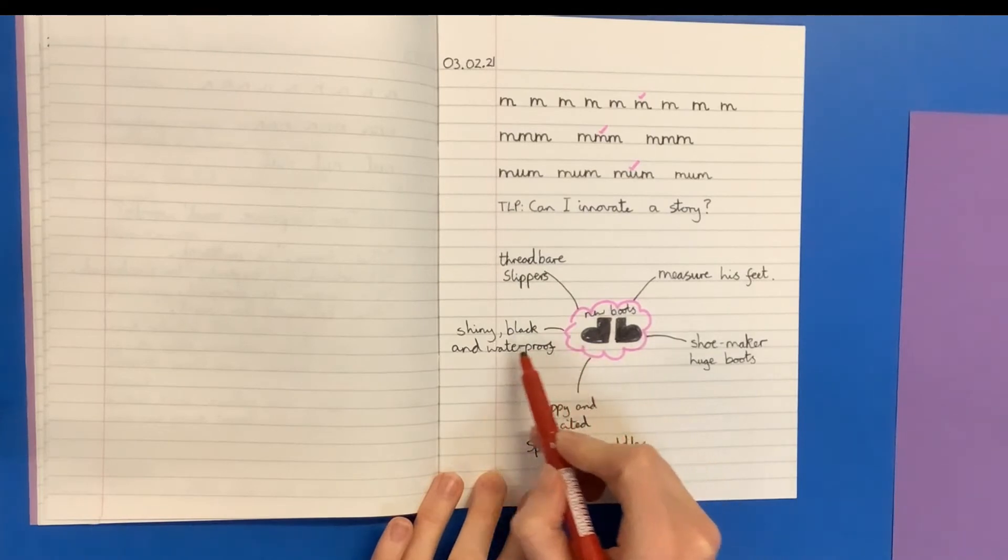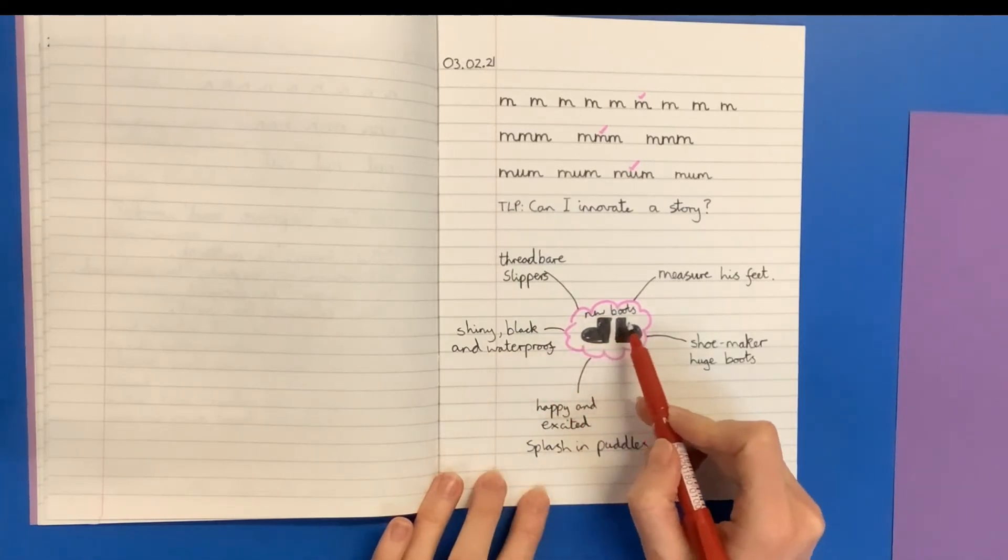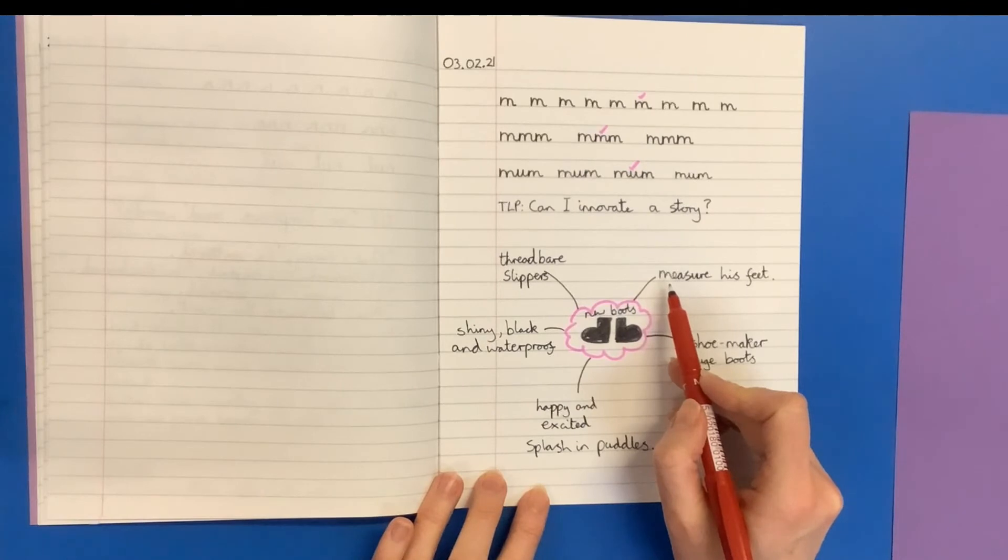So I'm thinking with the new boots. He wants them instead of threadbare slippers. He wants them to be shiny, black and waterproof. So Jim needs to measure his feet.